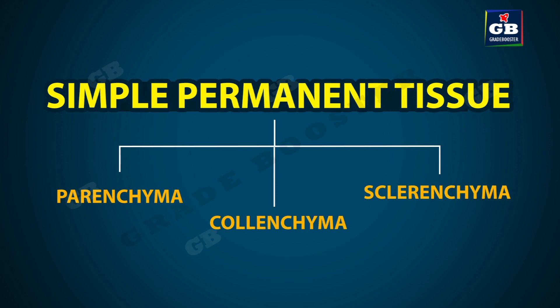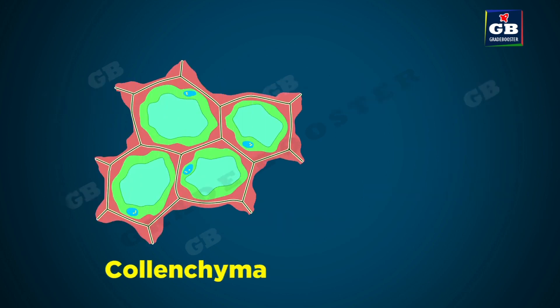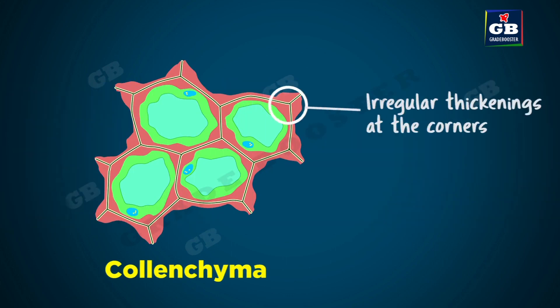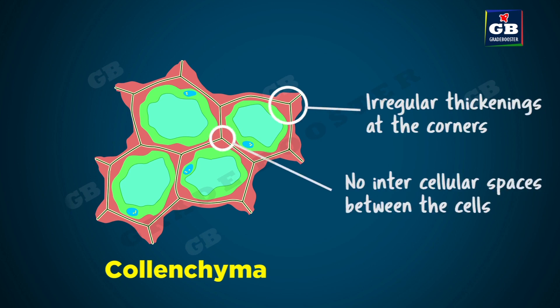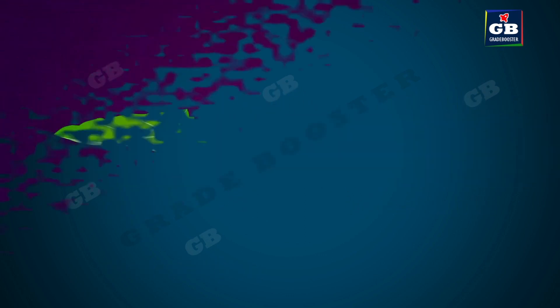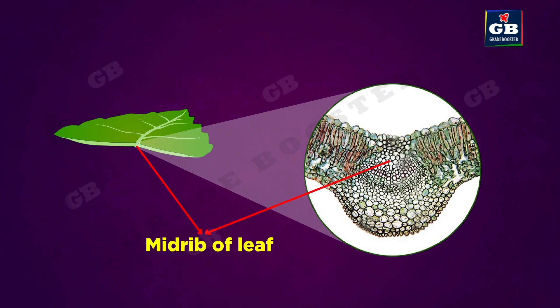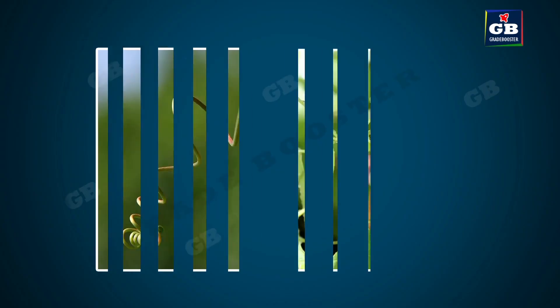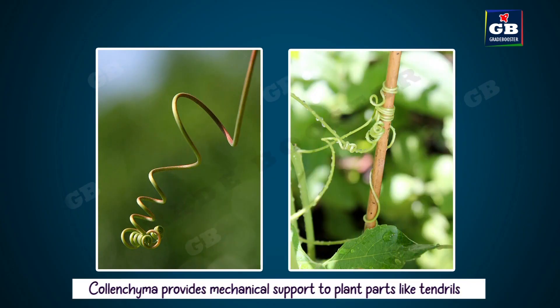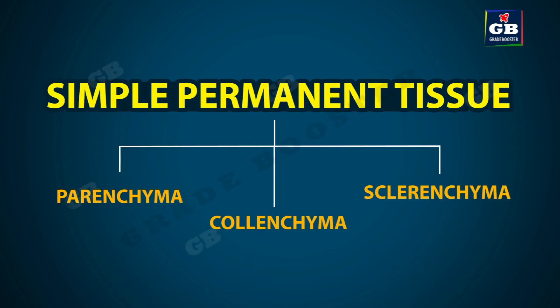The next type of simple permanent tissue is collenchyma. The cells of collenchyma are living cells; they are elongated with irregular thickenings at the corners. The intracellular space between the cells of collenchyma is very less. It gives flexibility to plant parts like tendrils and stems of climbers without breaking, and also provides mechanical support.